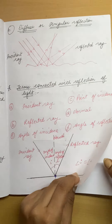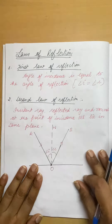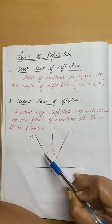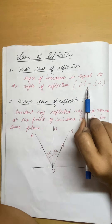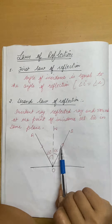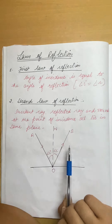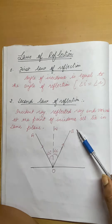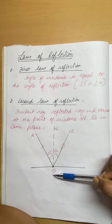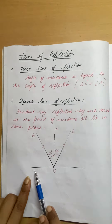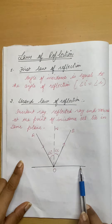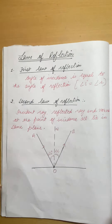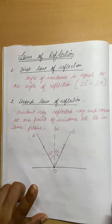Next we will study the laws of reflection. There are two laws. According to the first law of reflection, the angle of incidence is always equal to the angle of reflection — if it is 30 degrees, it is 30 degrees; if it is 40 degrees, it is 40 degrees. According to the second law of reflection, the incident ray, normal ray, and reflected ray all lie on the same plane. This is the second law of reflection.